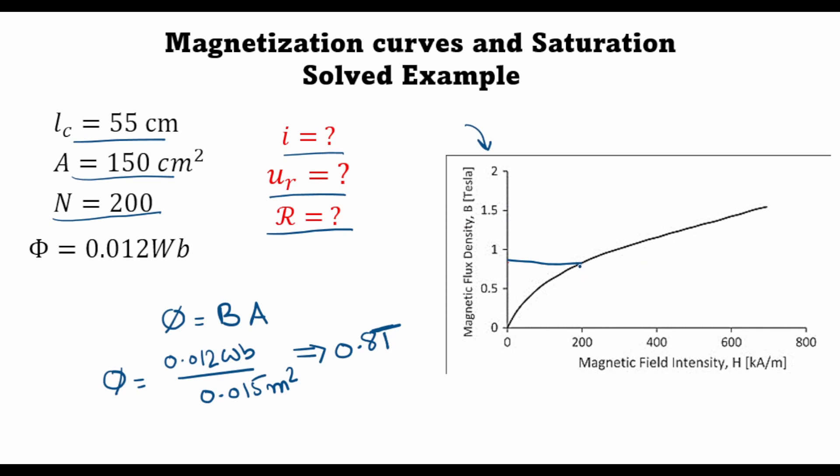And corresponding to that flux density, I want to find out the magnetic field intensity H. So from this curve I get the value of H as 200 kilo ampere turns per meter.